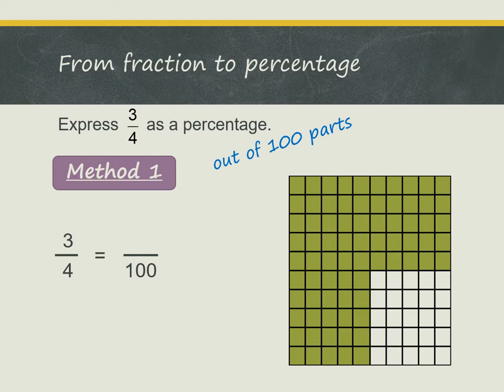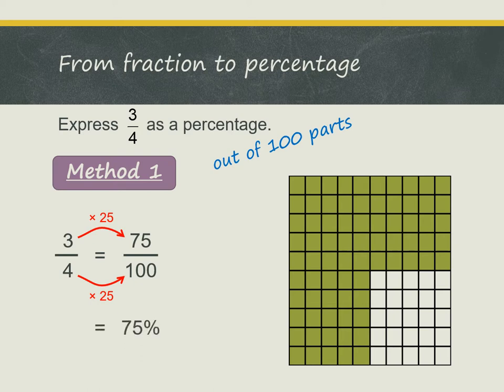That means I divide into 100 parts. Notice that from 4 to 100, I can multiply by 25. So in the same way, I multiply the numerator 3 by 25, and I get the answer 75 out of 100. Then we can express this as a percentage, which is 75%.